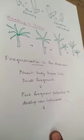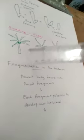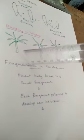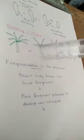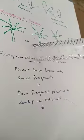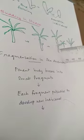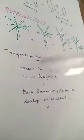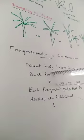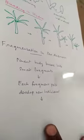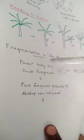This process is called Budding. Next is Fragmentation in Sea Anemone. Fragmentation means the body is cut into small fragments. Each fragment grows into a new organism. In Sea Anemone, the parent body breaks into small fragments, and each fragment potentially develops into a new individual. This process is known as Fragmentation.